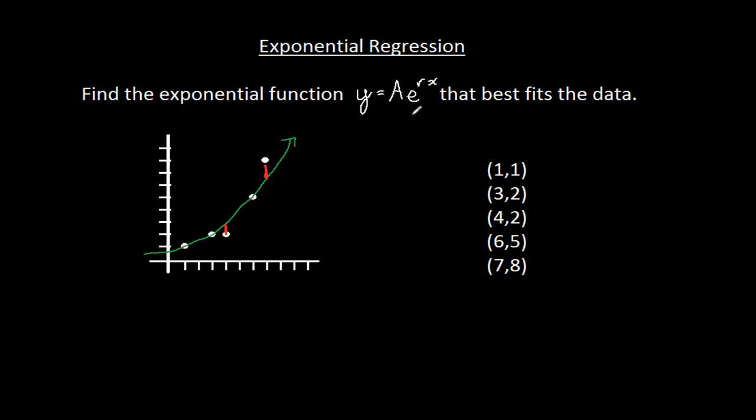Because of that, what we do is we take this model right here, this y = A e^(rx), and we turn it into a linear model. So if I have y equals a times e to the power of rx, remember the r is usually called the exponential growth rate.